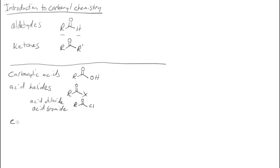We can have esters. In an ester, we have an R group on one side of the carbonyl and an OR prime on the other side — another carbon group on the other side of the oxygen. So it's different from carboxylic acids that have an OH; in an ester we have an OR.